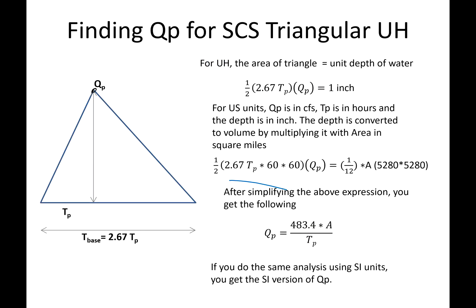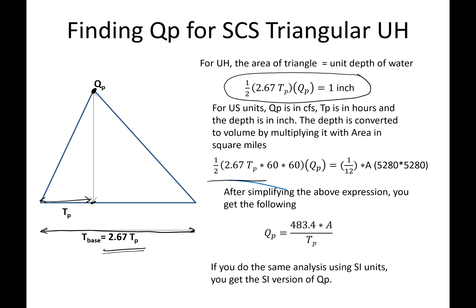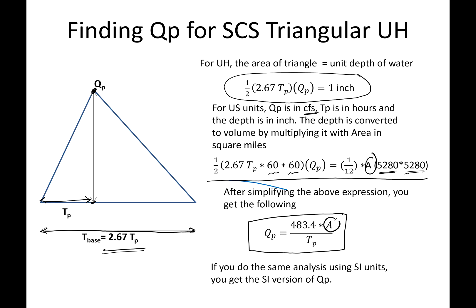For the triangular approximation, Qp is at the peak, and the base time is approximately 2.67 times the time to peak. By equating the area of the triangle to one inch of rainfall volume, and converting tp from hours to seconds (since Qp is in cfs) and area from square miles to square feet, we can solve for an expression for Qp.